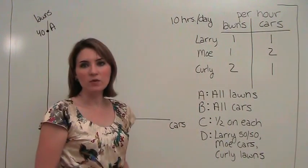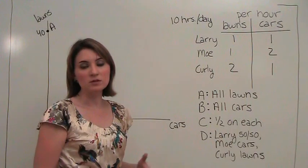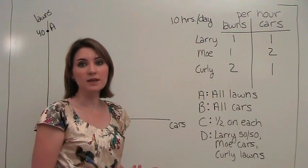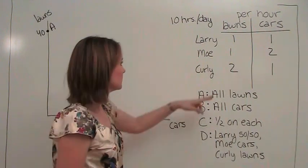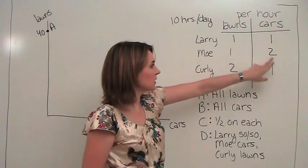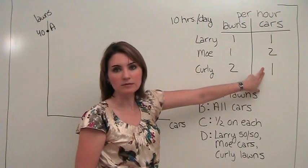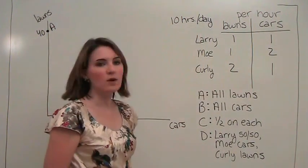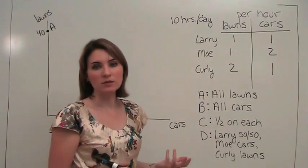Point B is the point where we're only washing cars. If we're only washing cars, how many can we wash? Well, one per hour for ten hours gives us ten, twenty, and then ten. So we can wash forty cars.